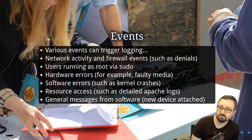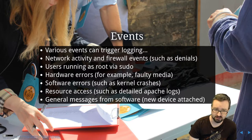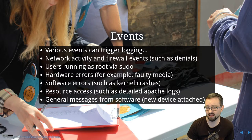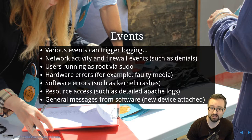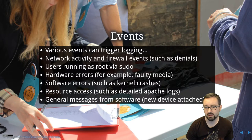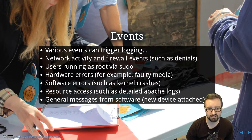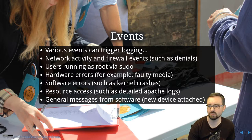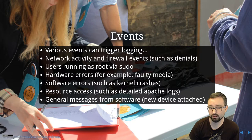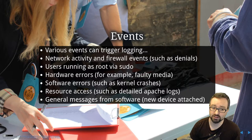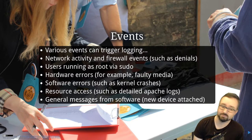There's obviously network activity, firewall events such as a denial of someone trying to access something. Whenever a user runs something as root via sudo or attempts to do that, it's logged to a file. Whenever there are hardware errors like faulty media, whenever there are software errors including kernel crashes. Various resource accesses — Apache and a lot of web servers will log every time anything is accessed, and every time it fails to load a website that'll get logged as well.